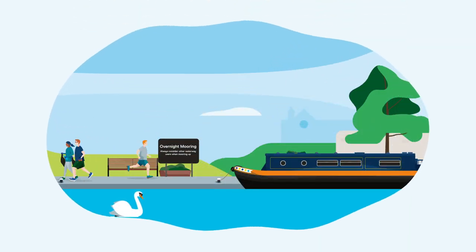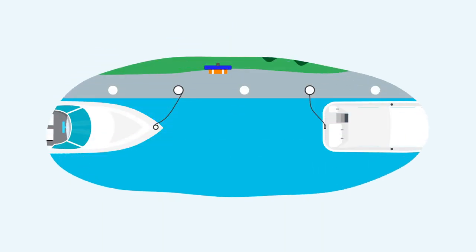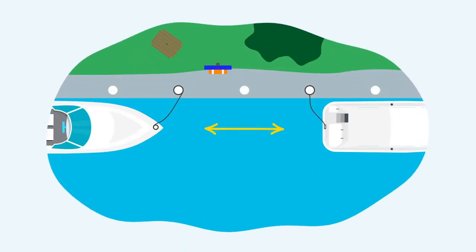Always consider other waterway users when mooring up, so don't moor on boater facilities unless you're using them. If you can, try to leave space between moored boats so that anglers have access to the water. In some busy areas, this may not always be possible.